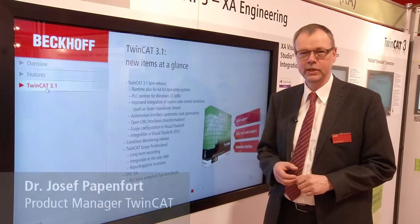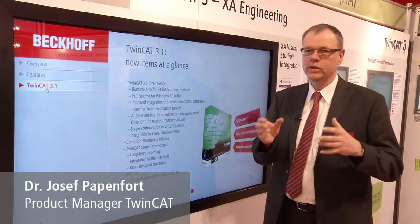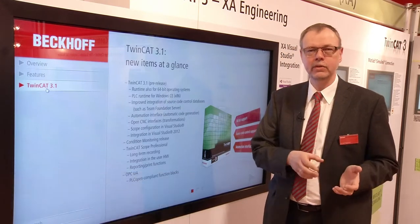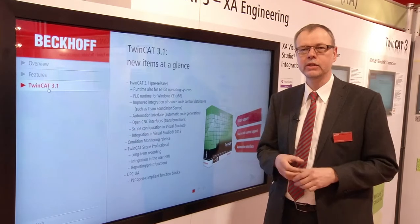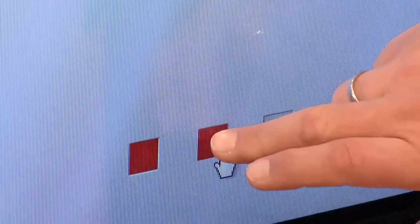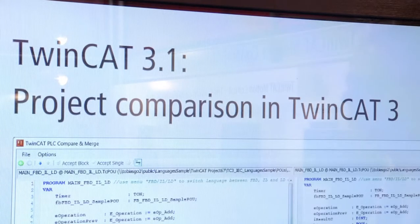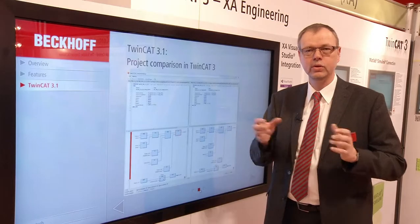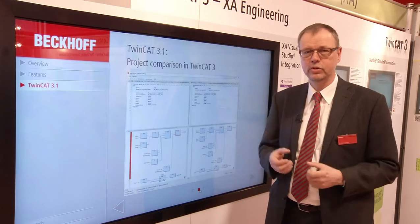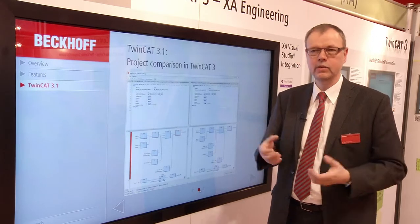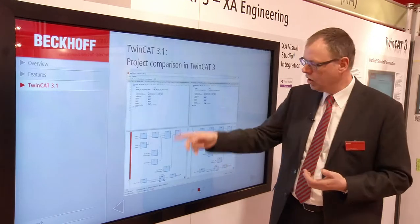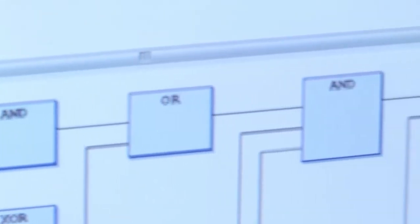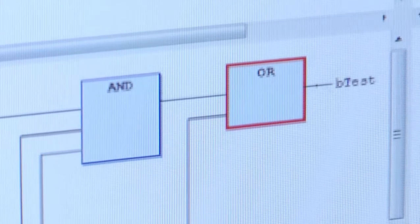There are many new things in TwinCAT 3.1, with new extensions in both engineering and runtime. One major advantage is that source code control is now completely integrated. This means you can use source code control tools available for Visual Studio, and a compare function is also integrated, including version comparison for PLC Function Blocks.